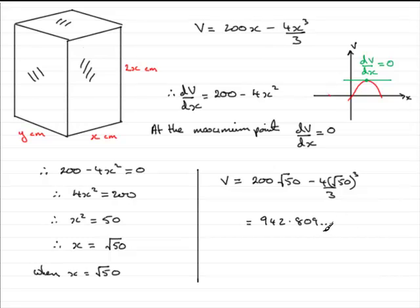And we're asked to give this to the nearest centimetre cubed. So if we round that to the nearest centimetre cubed, we get 943 centimetre cubes, and we'll just put there to the nearest centimetre cube.